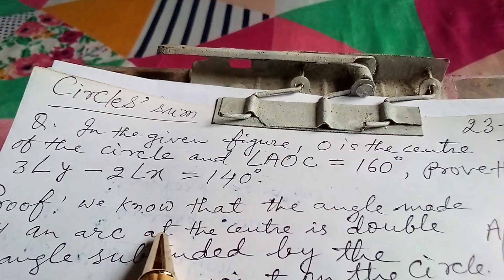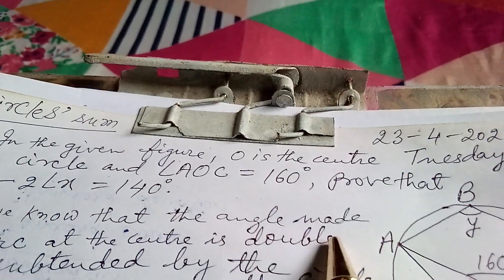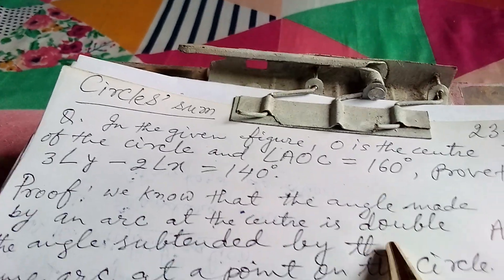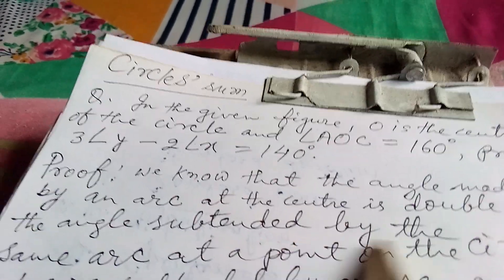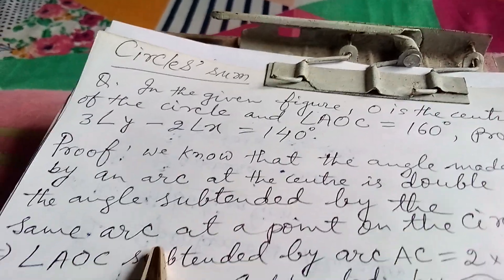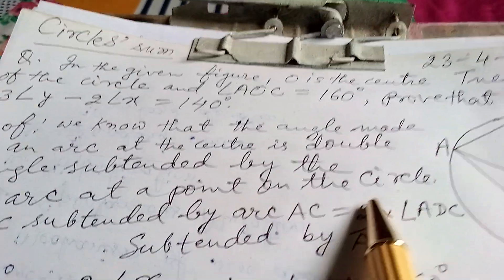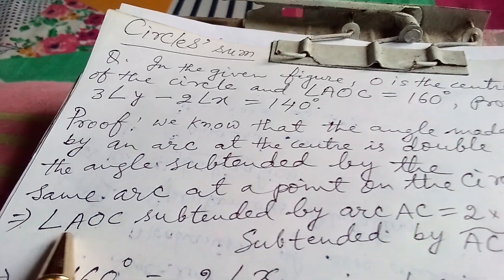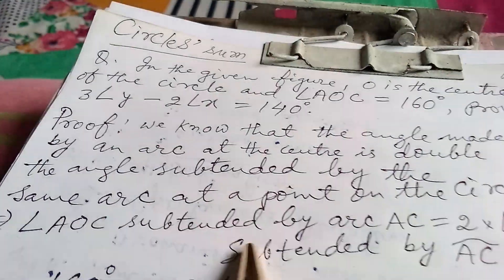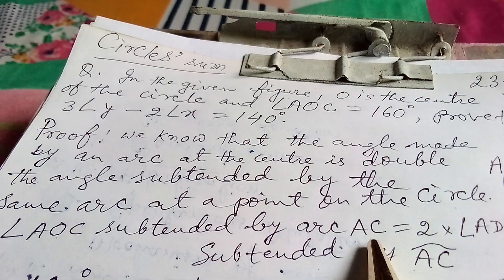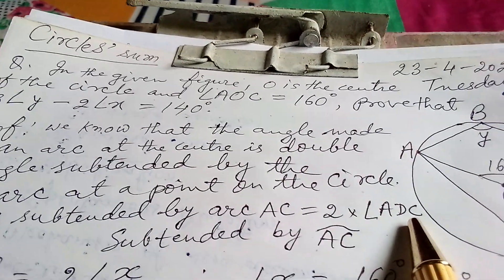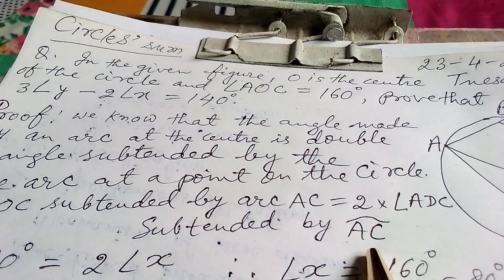the proof is, we know that the angle made by an arc at the center is double the angle subtended by the same arc at a point on the circle. So,